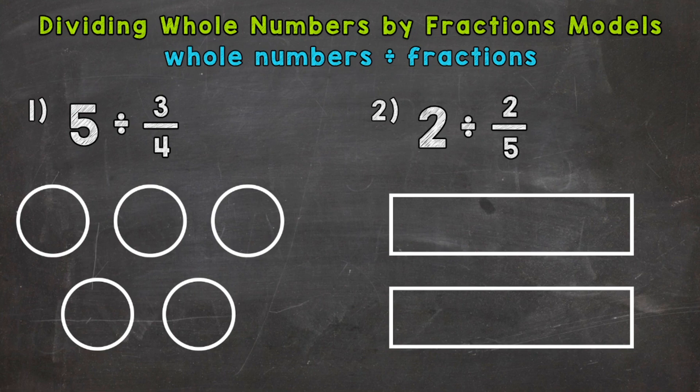So let's jump right into number one, where we have 5 divided by 3 fourths. So in this problem, we're taking 5 wholes and splitting it into groups of 3 fourths and seeing how many groups of 3 fourths we can make out of those 5 wholes.